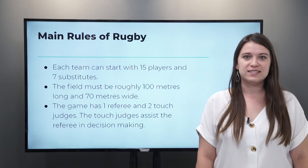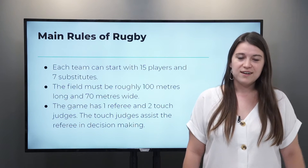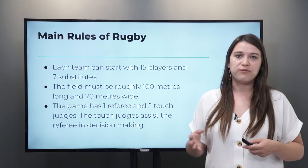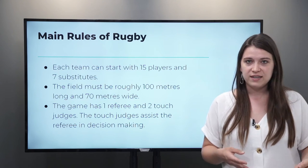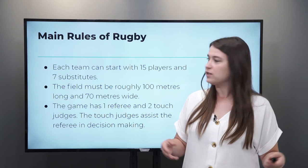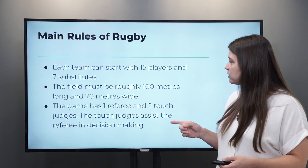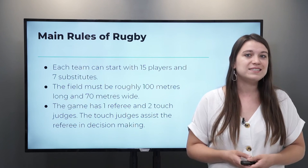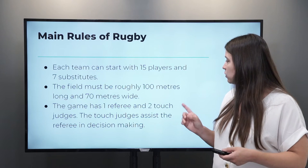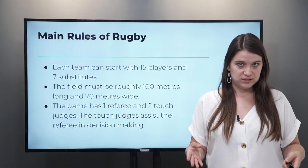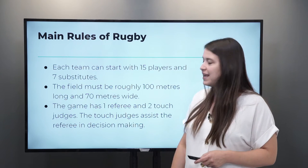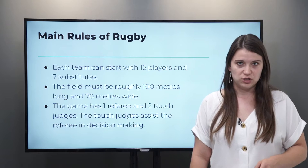Let's look at some of the rules. Each team starts with 15 players and seven substitutes. What about the field? The field must be roughly 100 meters long and 70 meters wide. The game has one referee and two touch judges. What is a touch judge? They assist the referee in his or her decision making.